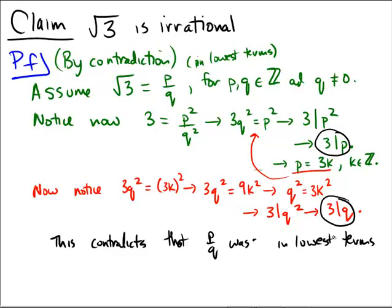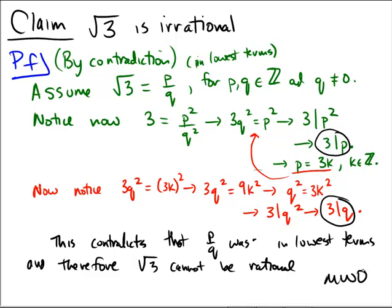And therefore, what do we get to conclude? Therefore, the assumption must be false, and therefore, radical 3 cannot be written as p over q. It cannot be a rational number. And this concludes this proof by contradiction.